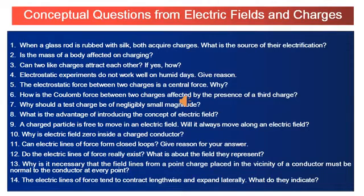If the direction of electric field were from positive to negative and then back from negative to positive, closed loops would form, but that is not the case. Electric field lines always go from positive to negative charge, so they cannot form closed loops. Next: do electric lines of force really exist? No — lines of force do not really exist; they are imaginary, hypothetical curves used to represent an electric field, but the electric field they represent is real.